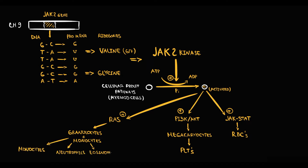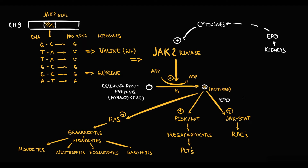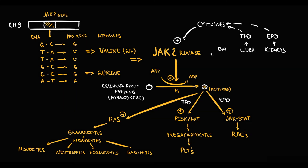In normal conditions, JAK2 kinase is active only when it receives a signal from cytokines. Kidneys produce erythropoietin that stimulates red blood cell production, the liver produces thrombopoietin that stimulates production of megakaryocytes from which platelets are formed, and the bone marrow microenvironment by secretion of granulocyte-macrophage colony-stimulating factor causes increased production of granulocytes and monocytes.